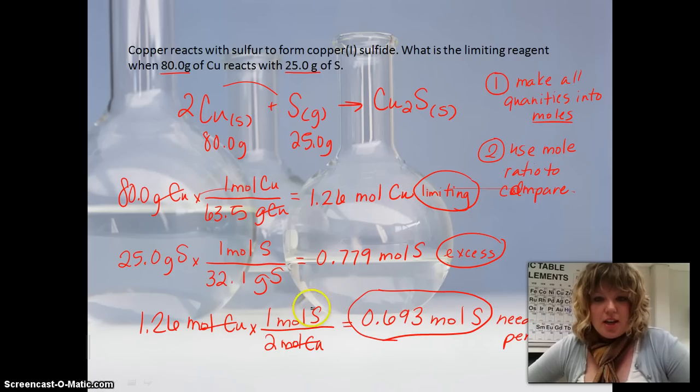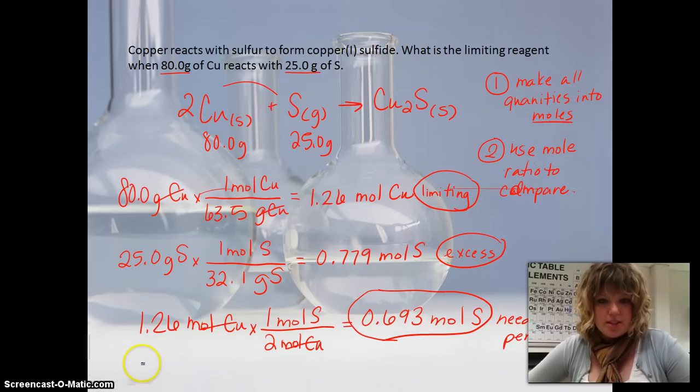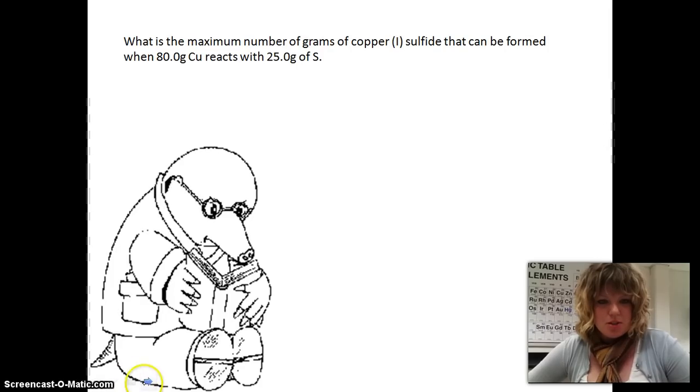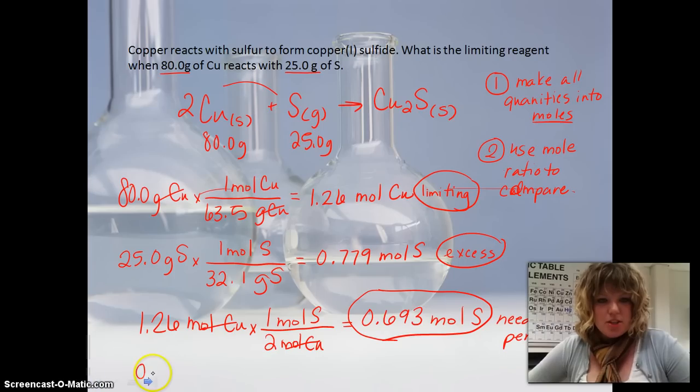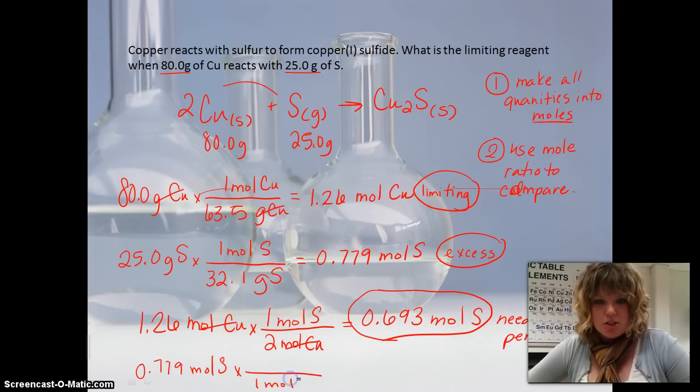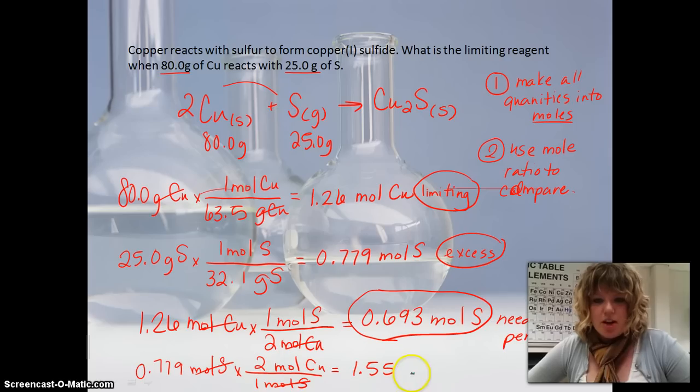And I could even show you, we could go ahead and use this number instead. Now, this would be the end. This is a full problem right here. But just for showing you an example, if we use 0.779 moles of sulfur instead of that copper up there, it would still use the mole ratio, the same one, except for it'd be flipped now, because we'd want to cancel out moles of sulfur. If we did this, we would get around 1.55 something, 2 times 0.779, would give us right around there, moles of copper.